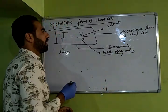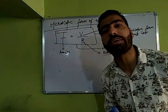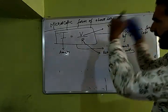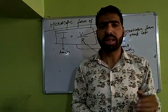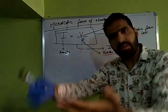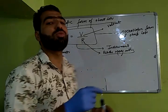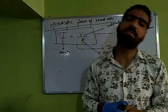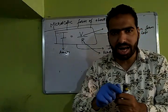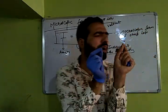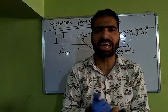So why do we say macroscopic form of Ohm's law? Because whatever terms are there, they can be measured by certain instruments, by certain devices. And another reason: whenever you measure the current, this current is not defined for a particular point — this current is defined for the whole conductor.